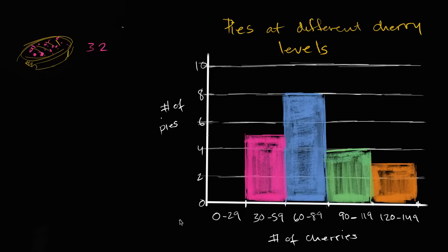And then you count them. So for example, you say, okay, five pies have 30 to 59 cherries. And so you create a histogram and you make this magenta bar go up to five. So that's how you would construct this histogram. That's what this pies at different cherry levels histogram is telling us.